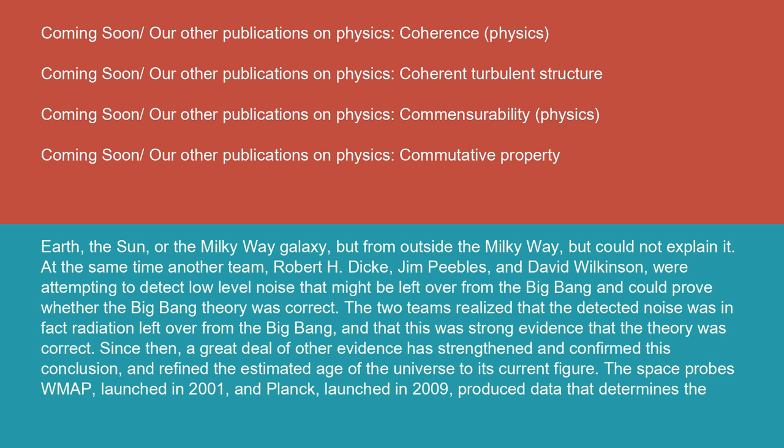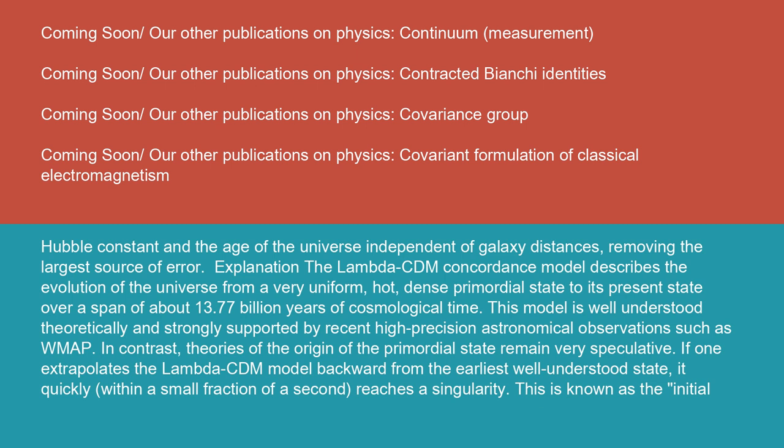Since then, a great deal of other evidence has strengthened and confirmed this conclusion and refined the estimated age of the universe to its current figure. The space probes WMAP, launched in 2001, and Planck, launched in 2009, produced data that determines the Hubble constant and the age of the universe independent of galaxy distances, removing the largest source of error.